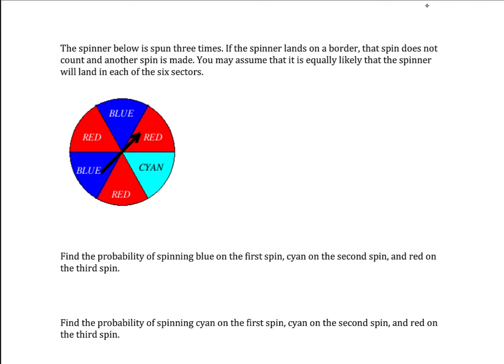Find the probability of spinning blue on the first spin, cyan on the second spin, and red on the third spin.